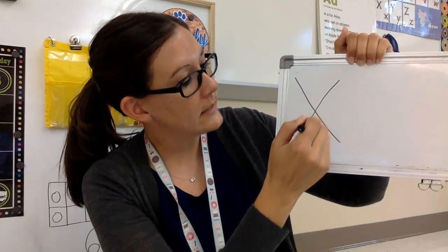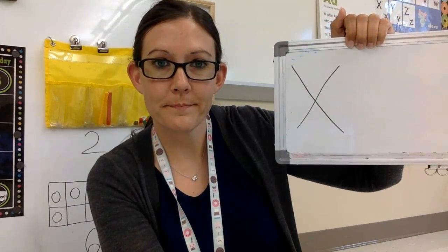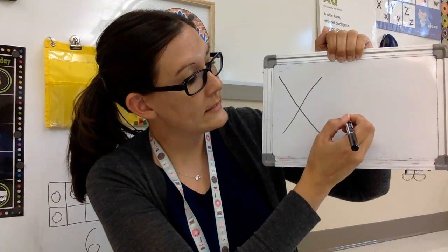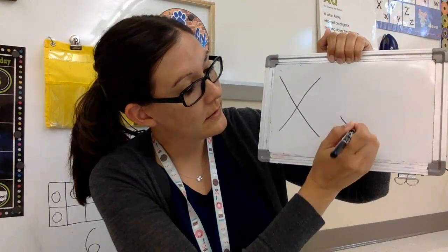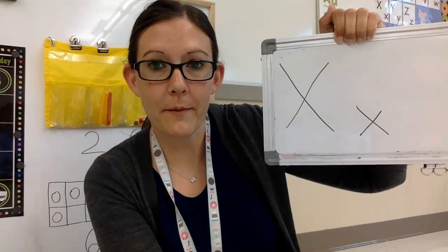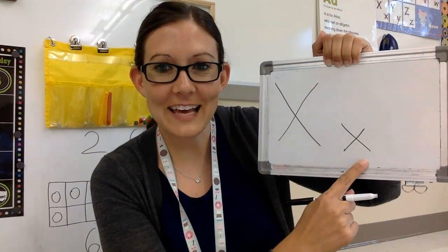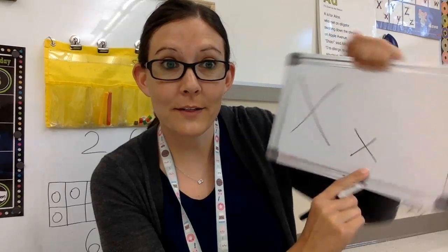Start up at the top, slant line down. Go to this side, slant line that way. Lowercase X is slanted line down, slanted line that way. Capital X, lowercase X. I want you to keep practicing those, okay?